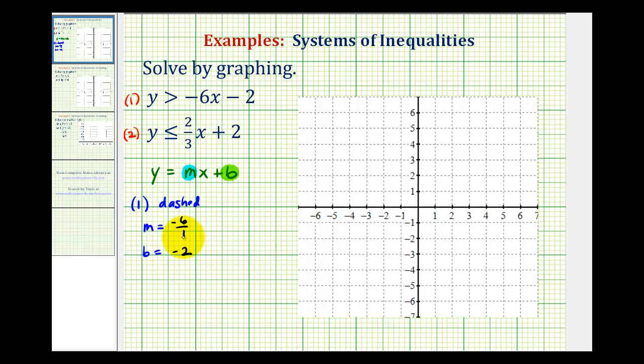So this is enough information to graph the boundary line. We'll plot negative two on the y axis, which is here. And then notice if we go down six units and right one unit, we're actually off the provided graph. So if we wanted to, we could write the slope as positive six over negative one. These two fractions are equivalent. So in this form, we would go up six units and then left one unit.